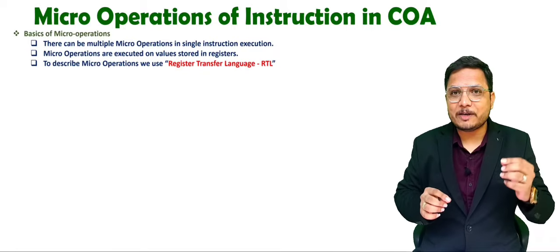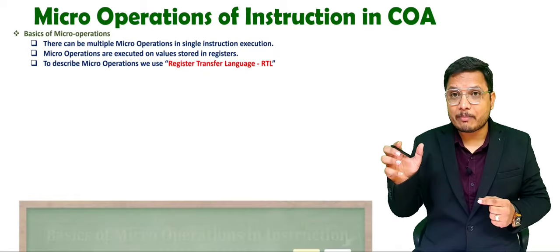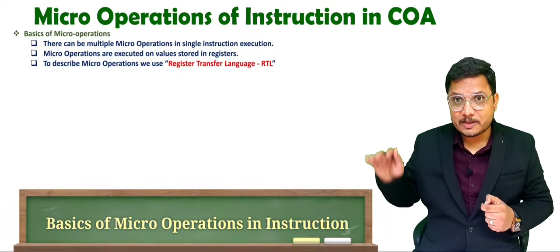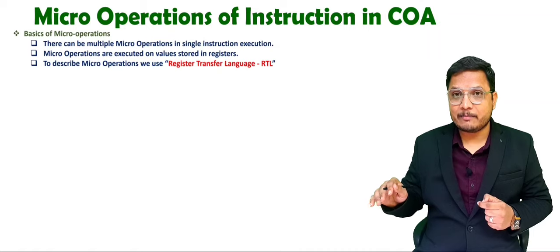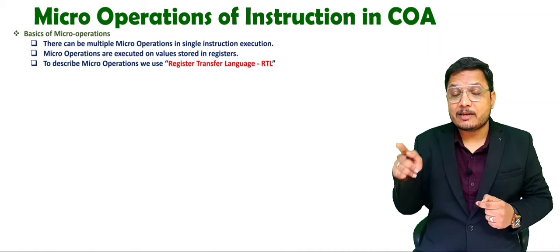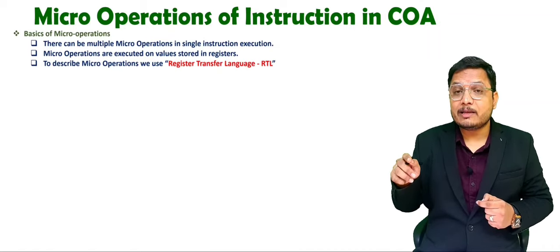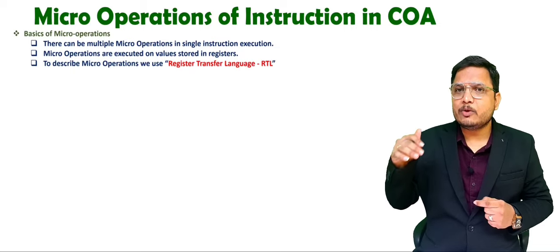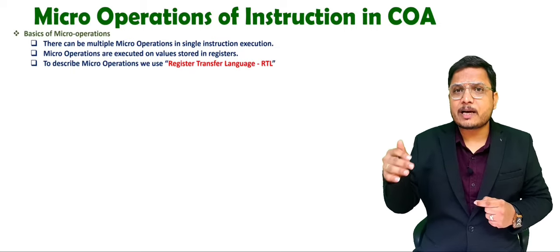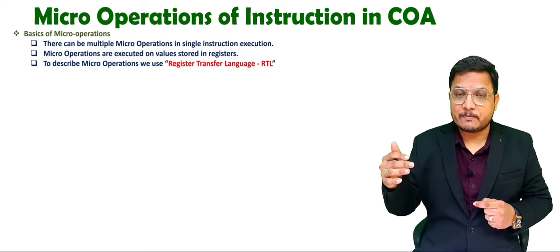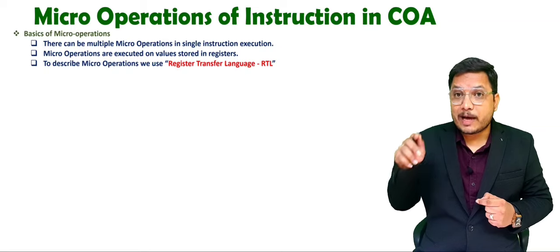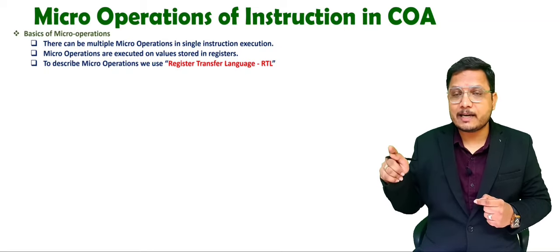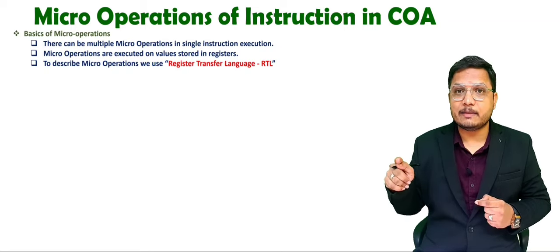You should know, my dear students, when we talk about a program, then inside a program there will be sets of instructions. When you execute one instruction, there are micro operations that are happening, and those micro operations are also referred to as micro instructions. So to execute one instruction, there are micro instructions happening inside the CPU.